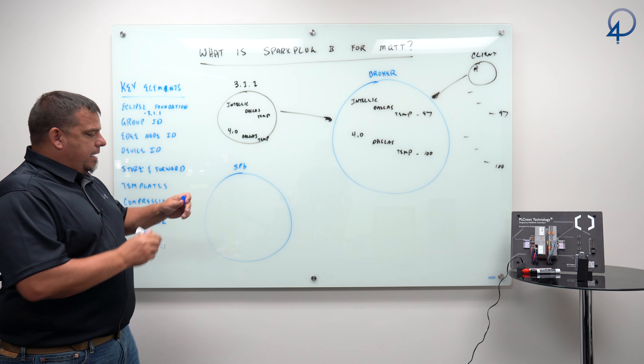Group ID, Edge Node ID, and Device ID are important concepts — basically the logical grouping of your topic namespace. Spark Plug B also supports store and forward: if the MQTT client implementing Spark Plug B loses its connection to the broker, it stores all events locally on the client. When the connection is re-established, it publishes them all to the broker with the correct values and timestamps in the order they happened. Because the timestamp comes from the client, it looks to consumers as if the disconnection was never there.